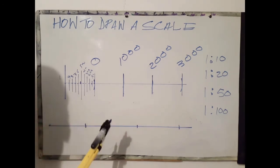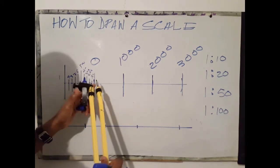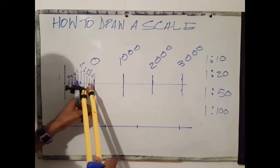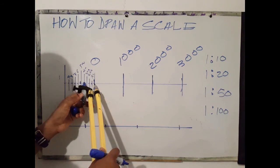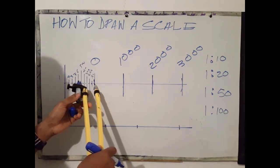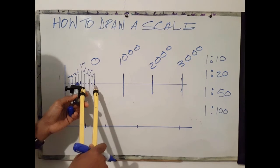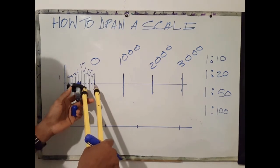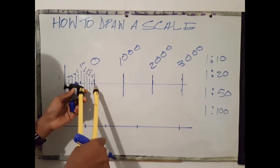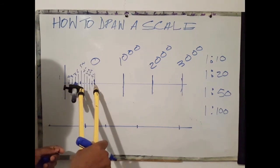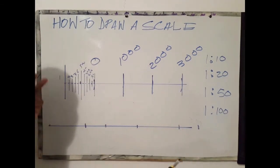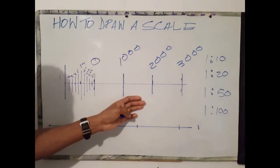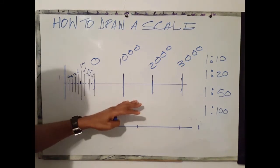Say for example we want 150. You would open your compass from 1 to midway the distance between 1 and 2. Let's use a larger value, say 1550. I would place my divider at 0, then extend to 600, to the midpoint between 6 and 7 to get 650, then I would transfer. That's pretty much how you draw a scale.